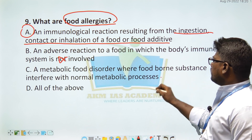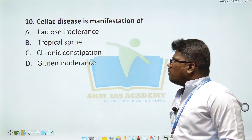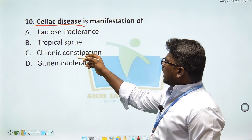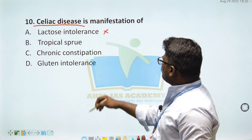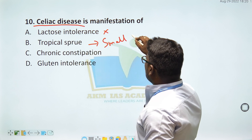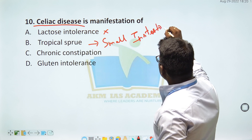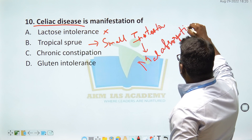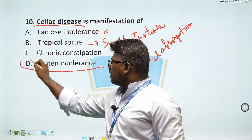A metabolic food disorder is where foodborne substances interfere with normal metabolic processes. An example is lactose intolerance. Tropical sprue is a small intestine malabsorption condition. Chronic constipation is also mentioned. Option D — malabsorption like tropical sprue — is the right answer.